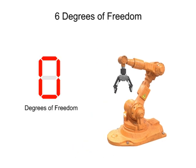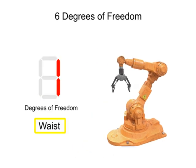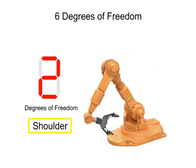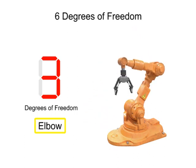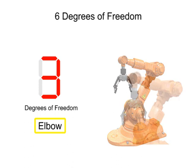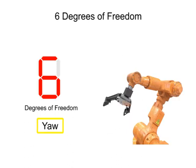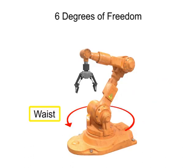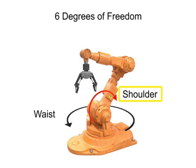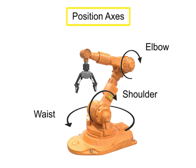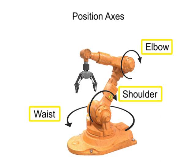It moves along one axis for each of the waist, shoulder, and elbow joints, and along three axes at the wrist using pitch, roll, and yaw. These particular motions help to locate the tool in the work area and are called position axes. Most robots have at least three position axes to help position the tool in the work area.